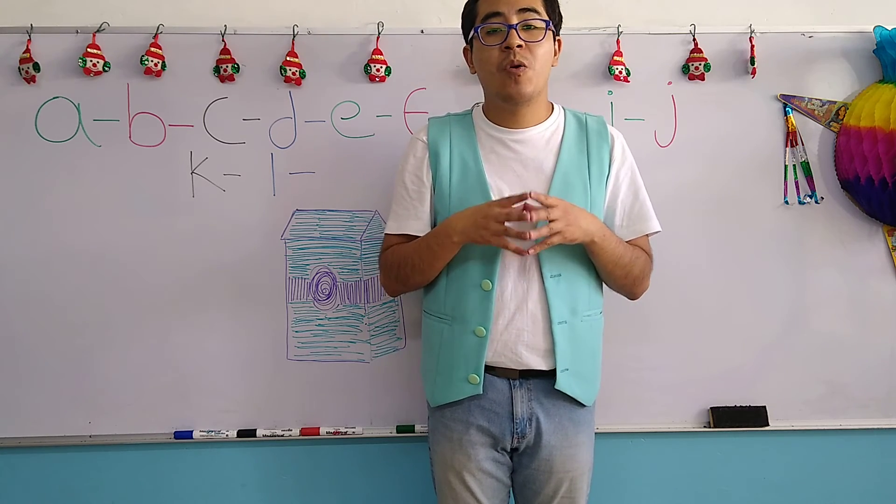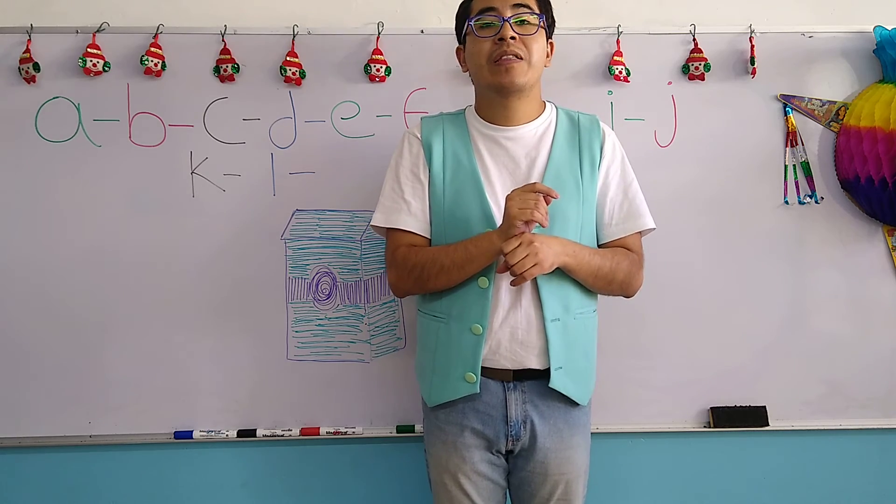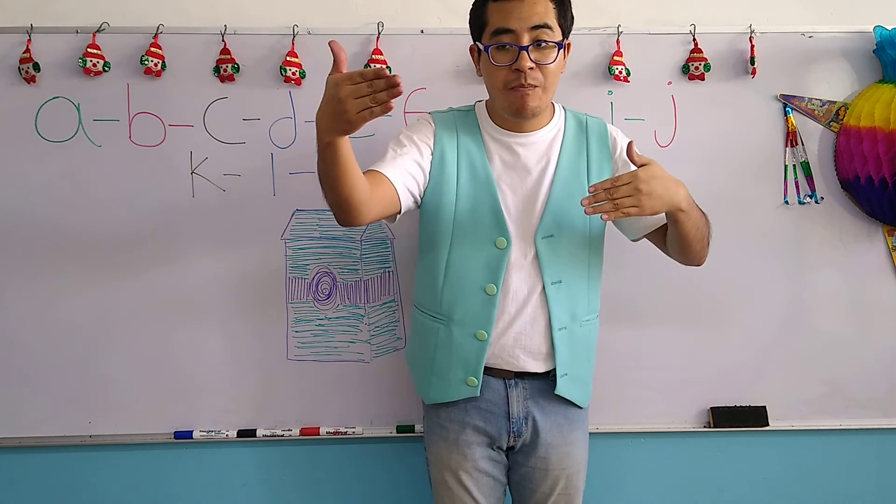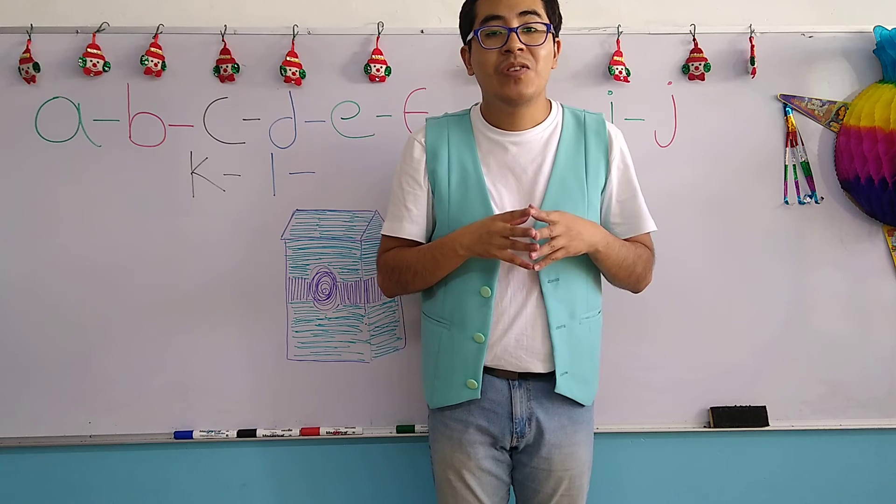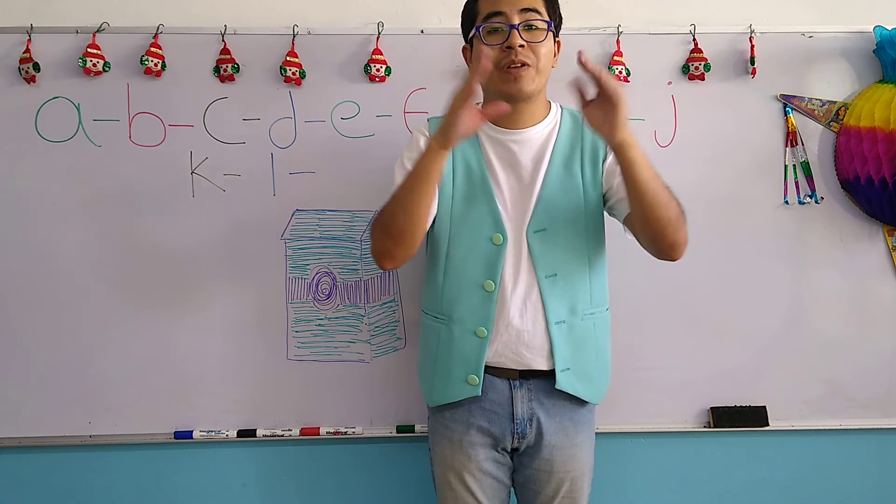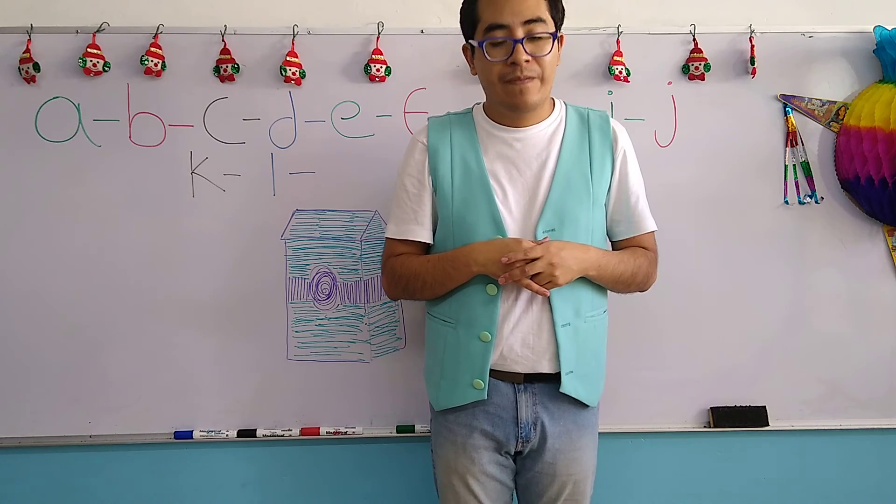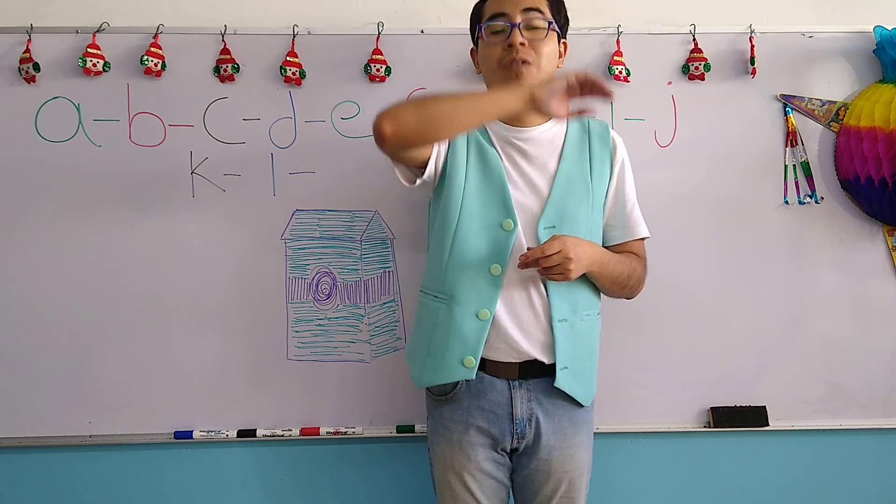Very good. So once again, that's it for today. Remember my children, it's very important that you continue practicing letters, numbers, objects. It's very, very important. If you have any doubt, don't forget that the teacher Jacob is always there for you. And that's it for today. Take care my children. I love you very much. Goodbye.